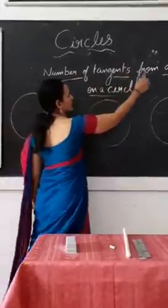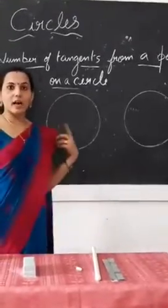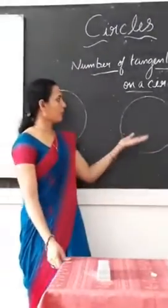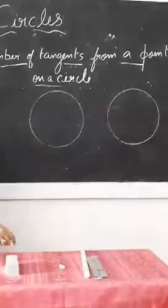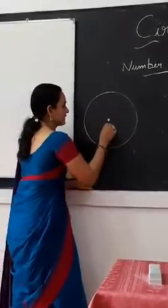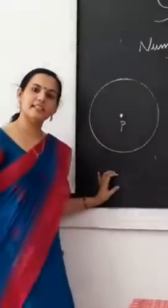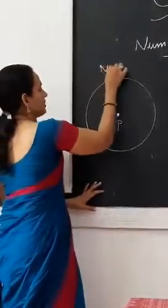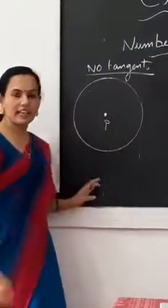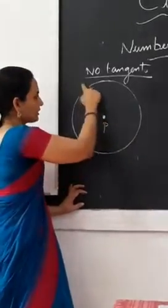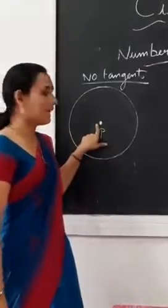Now let us discuss the number of tangents that can be drawn from a point on or near a circle. First case: if a point P is inside the circle, there is no tangent. We cannot draw a tangent from a point inside the circle — any such line would touch the circle at two distinct points.